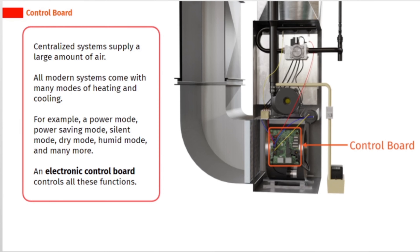Centralized systems supply a large amount of air. All modern systems come with many modes of heating and cooling — for example, a power mode, power saving mode, silent mode, dry mode, humid mode, and many more. An electronic control board controls all these functions.